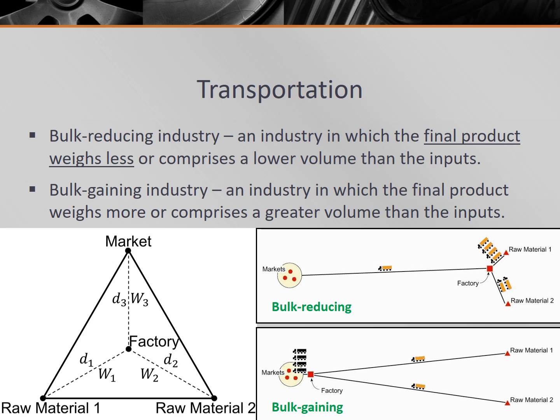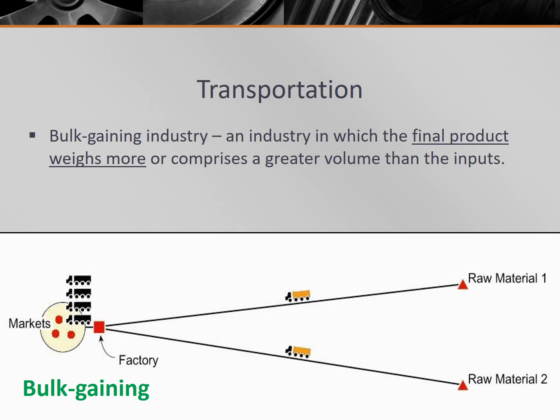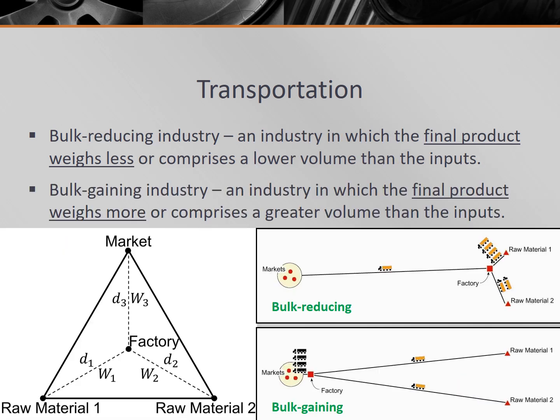On the other hand, there are bulk gaining industries, which are industries in which the final product weighs more or comprises a greater volume than the inputs. These are also called weight gaining industries, market oriented industries, or market dependent industries. An industry where the final product weighs more or becomes larger in size will locate the factory closer to the market to keep transportation costs as low as possible. Automobile manufacturing is a good example because the component parts — the bumper, the windshield, and the steering wheel — weigh less individually than the finished car. So generally, the factory will locate nearest the heavier part of production.